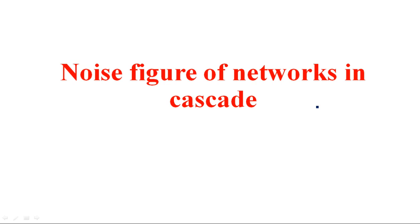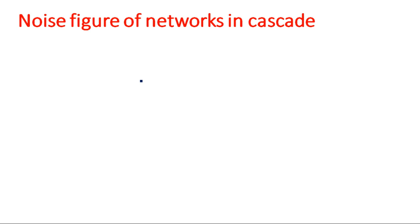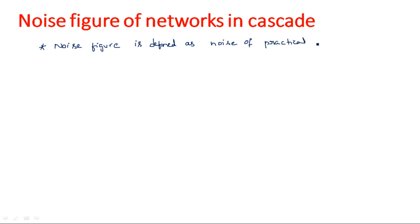Hi everyone. In this video I am going to explain about the noise figure of networks connected in cascade. Before going into the cascaded connection, let us recall the definition of noise figure. Noise figure is defined as the ratio of noise out of the practical receiver to the noise out of the ideal receiver.